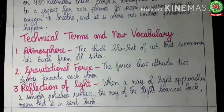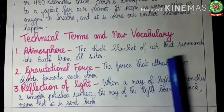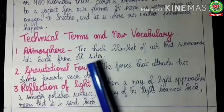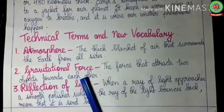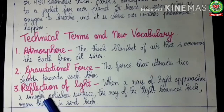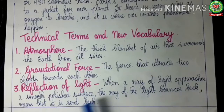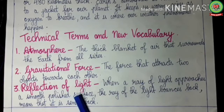Let us go through the technical terms for today's topic. Number 1, atmosphere: the thick blanket of air that surrounds the earth from all sides is called atmosphere. Number 2, gravitational force: the force that attracts two objects towards each other. Number 3, reflection of light: when a ray of light approaches a smooth polished surface like a mirror, the ray bounces back — this is called reflection of light.